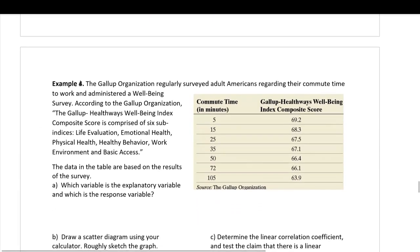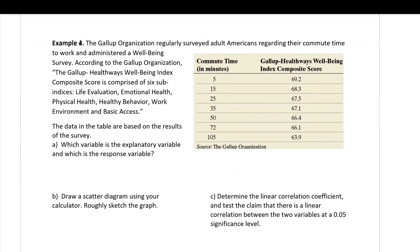Example: The Gallup organization regularly surveyed adult Americans regarding their commute time to work and administered a well-being survey. The Gallup Healthways Well-Being Index composite score is comprised of six indices: life evaluation, emotional health, physical health, healthy behavior, work environment, and basic access. Each row in the table is an individual — the first individual takes five minutes to commute and has a well-being index of 69.2.